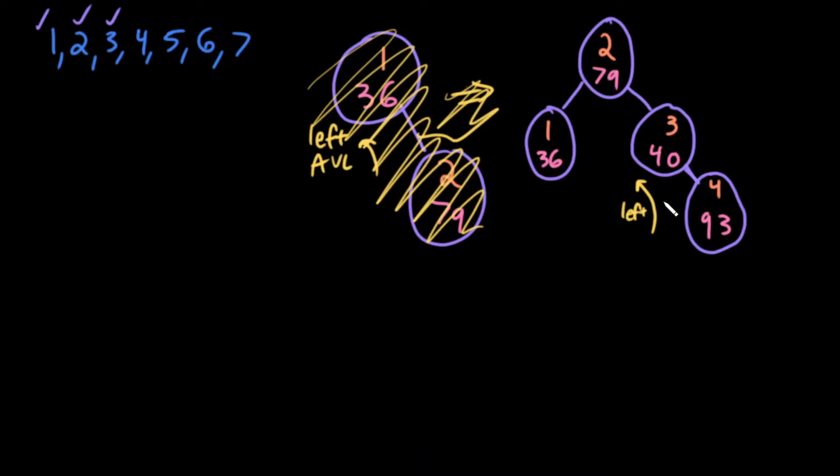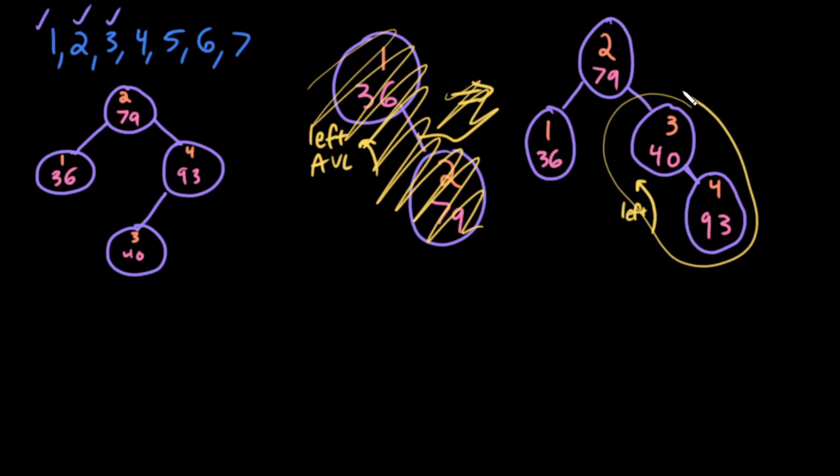So the resulting tree is two is still at the root with 79. I'll draw the outlines first and then I'll fill them in. These are 2, 1, 4, 3, and their priorities are 79, 36, 93, and 40. So this is the resulting tree of doing this AVL rotation.